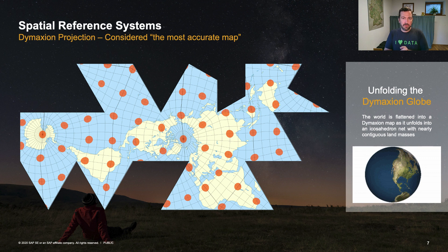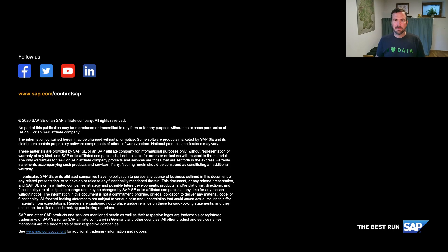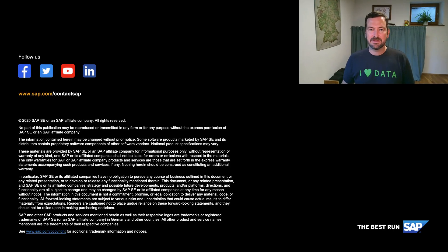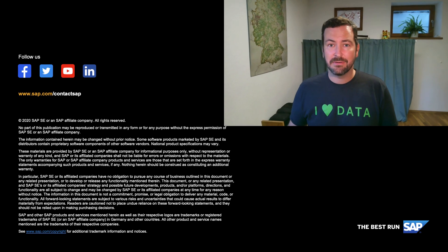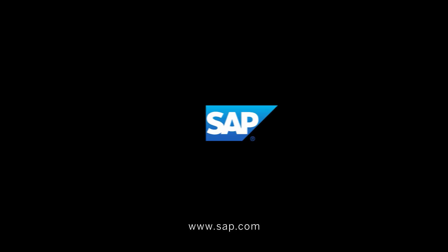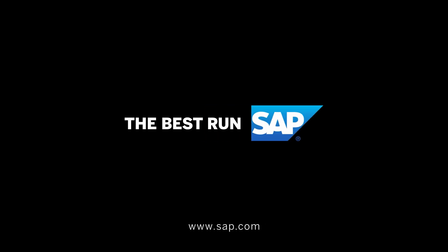As of now, with HANA 2 SPS 05 and HANA Cloud, we support more than 9,000 spatial reference systems, both round-earth and planar projections. Thank you for listening and stay tuned for my next video, where I'm going to tell you more about the support of spatial data in SAP's ecosystem.